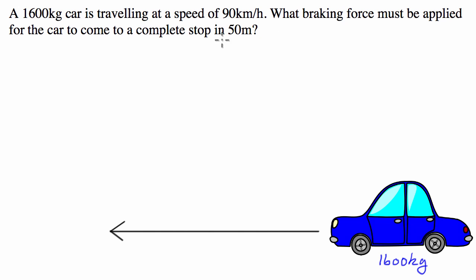And we know that we're going 90 kilometres an hour, so what we're going to do is convert that to standard units, so we're going to divide that by 3.6 to get to metres per second, and we get 25. And we've got to get the car to come to a complete stop in 50 metres.